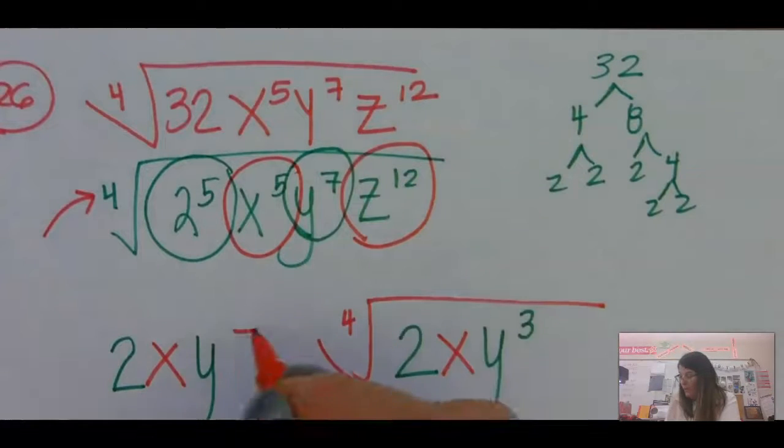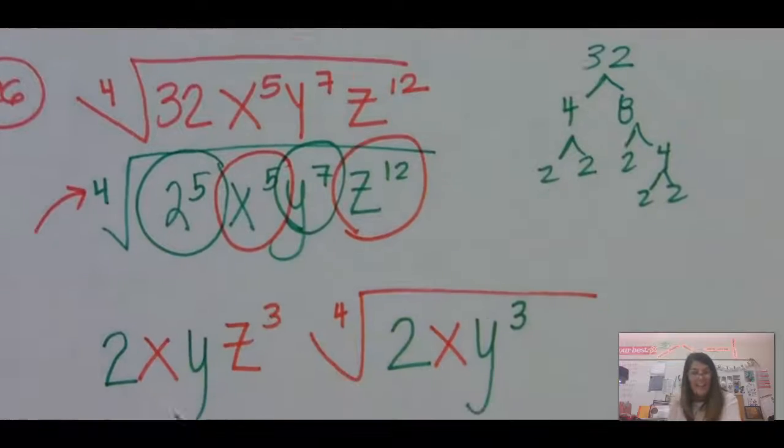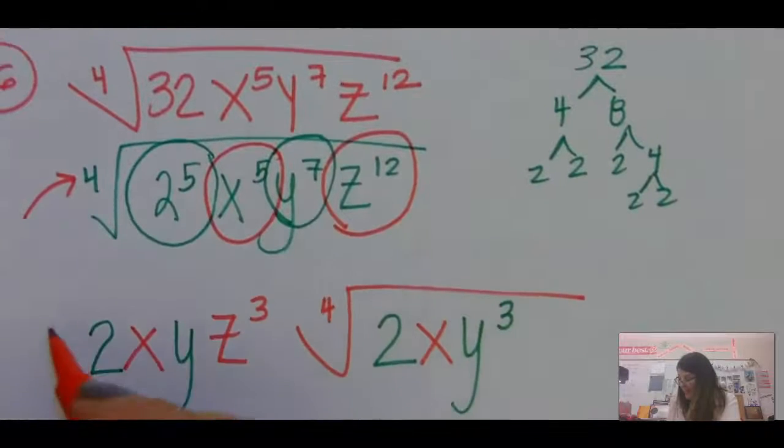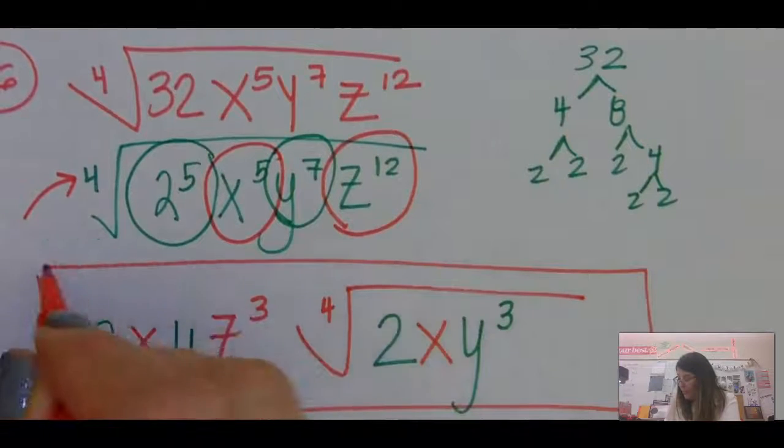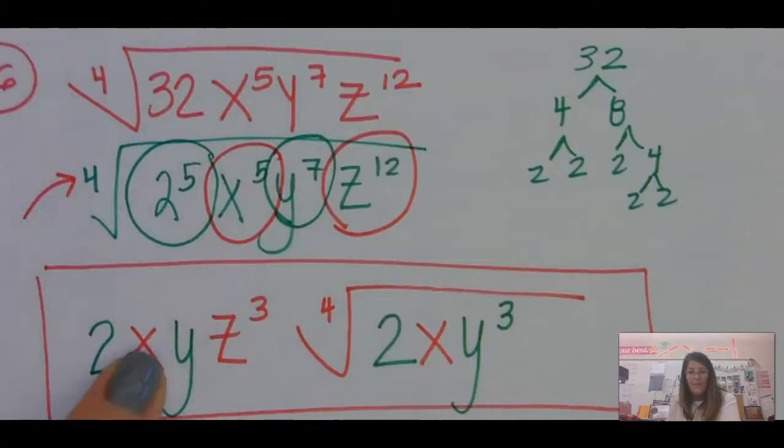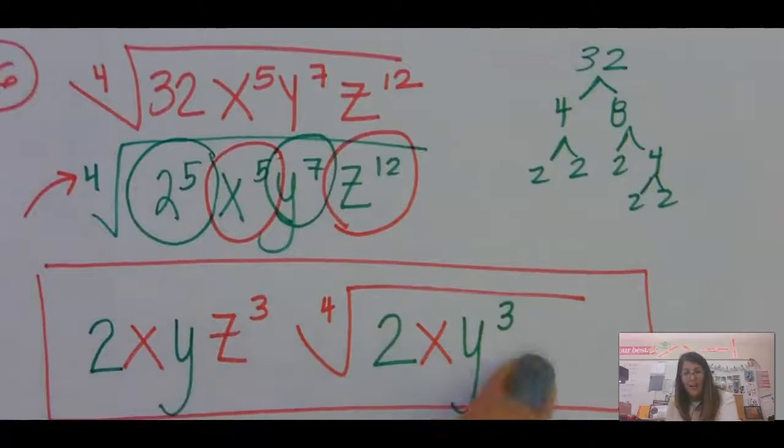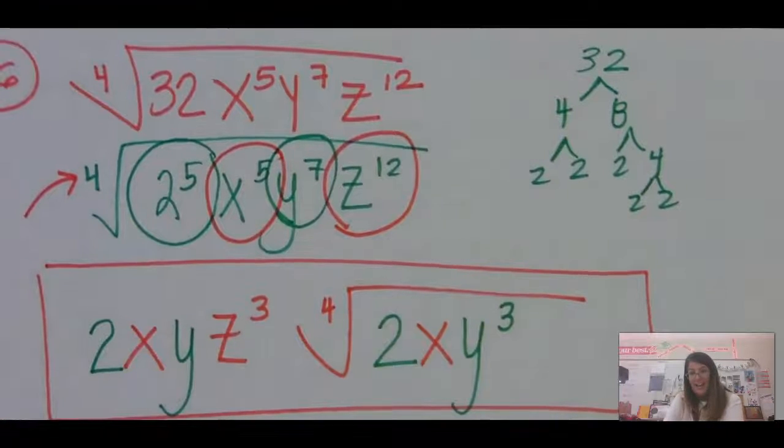Then 4 goes into 12 three times. And guys, that's it. That's your answer. We're just looking for groups of 4 and getting them set free. And you've got the other guys still trapped on the inside here.